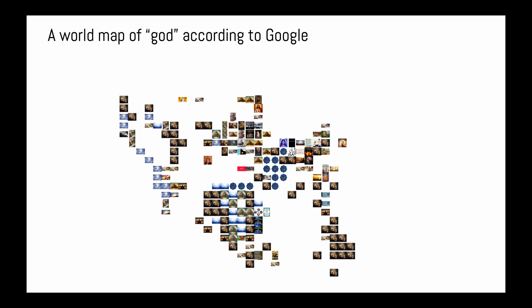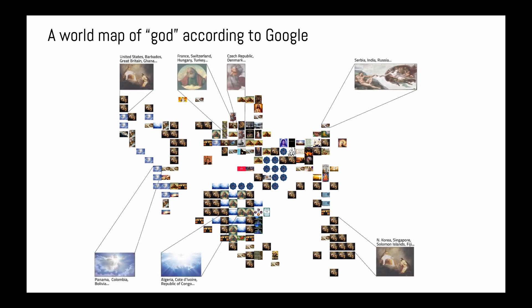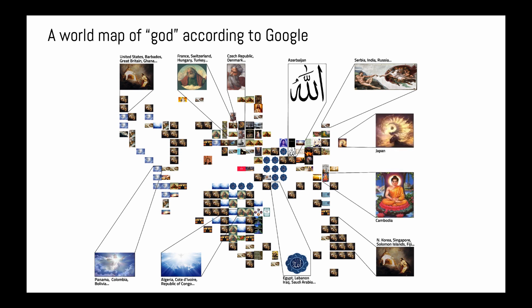Looking at this image map, some patterns align with what one might expect. Christian-majority countries tend to show images for a Christian God, while Muslim-majority countries tend to show images for Allah in written Arabic. We also see Buddhist, Hindu, Shinto, and other kinds of imagery. But other patterns are more surprising.